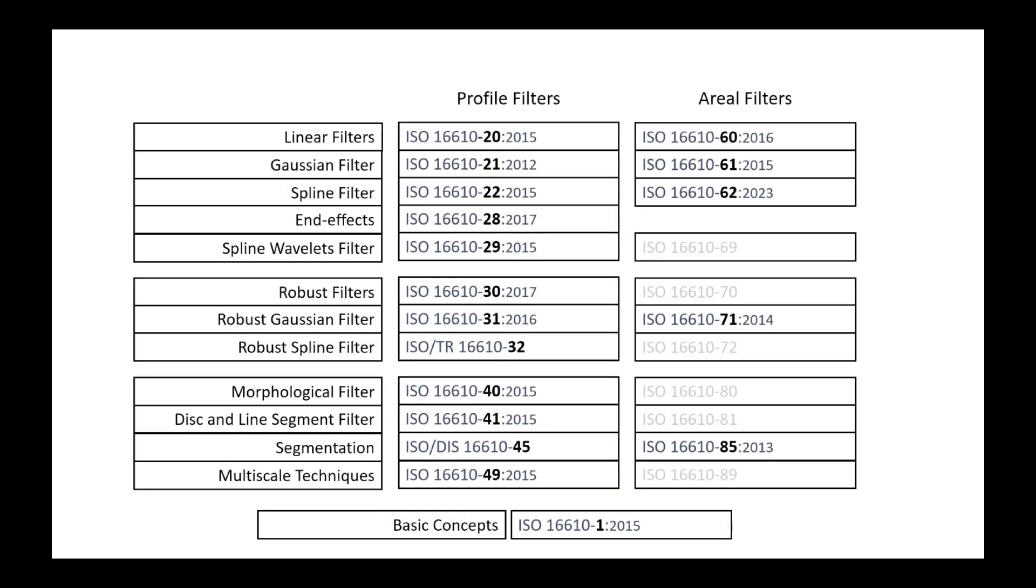The ISO-16-610 standard, dedicated to profile and surface filters, is made up of many parts, each dealing with a type of filter. Some parts remain to be developed, especially on the surfaces, but they will be published in the future. The difference between these types of filters and their particular use, is described in an article of the Metrology Guide devoted to filtering techniques. Do not hesitate to refer to it for more information.